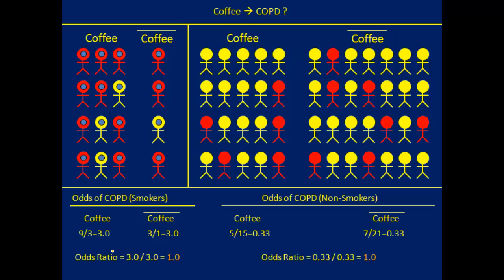Although coffee drinking is not associated with COPD within either smoking group, you'll notice that the odds of COPD among smokers — regardless of coffee drinking — is higher than among non-smokers. Because there was a higher percentage of smokers among coffee drinkers, on average coffee drinkers had higher odds of COPD. Those smokers brought their higher COPD risk to the group, producing an apparent association between coffee drinking and COPD — but in fact it was confounded by smoking.